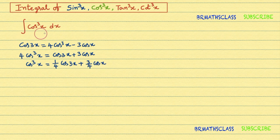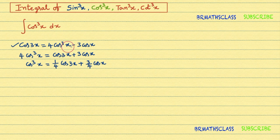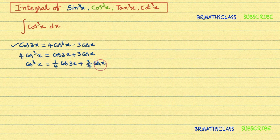To calculate the integral of cos³x dx, we use the cos3x formula: cos3x = 4cos³x − 3cosx. From this, we can get cos³x equal to (1/4)cos3x + (3/4)cosx.